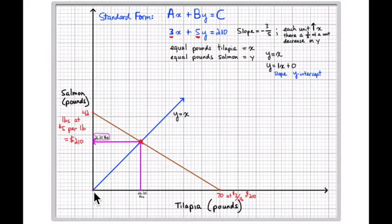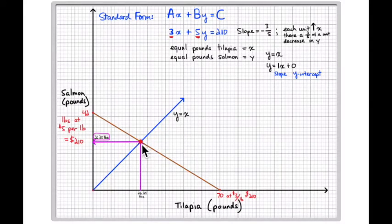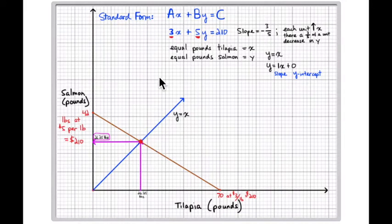This is a proportional relationship. If I increase the tilapia ten pounds, I increase the salmon ten pounds; increase the tilapia twenty pounds, I increase the salmon twenty pounds. The problem gives us twenty-six and a quarter pounds and twenty-six and a quarter pounds. That point solves y equals x because they're both the same amount of fish.